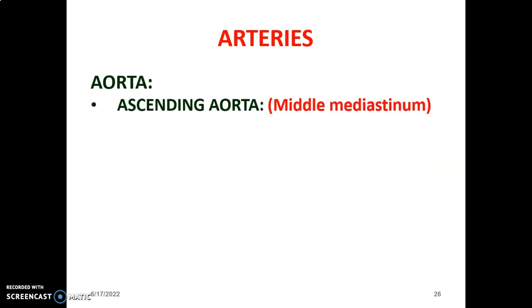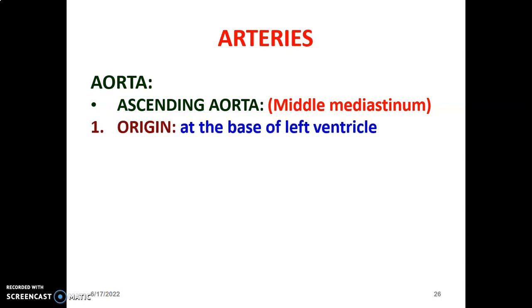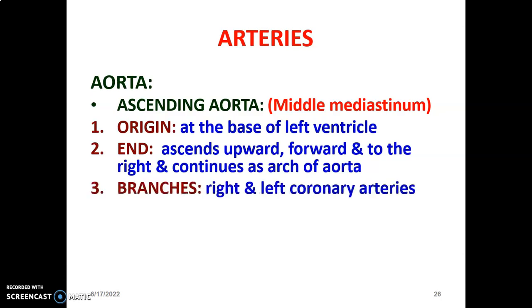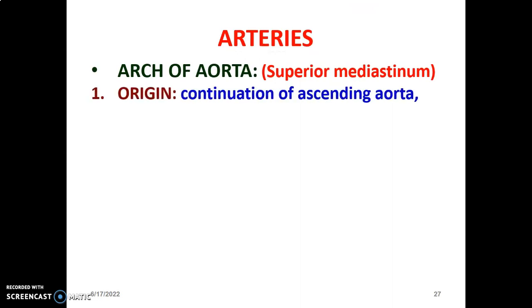The arteries found in the mediastinum include the ascending aorta, which is in the middle mediastinum. It originates at the base of the left ventricle, carrying blood from the left ventricle. The ascending aorta terminates at the plane that divides the mediastinum into superior and inferior, ascending upwards and forwards to the right, continuing as the arc of the aorta at the sternal angle of Louis at T4-T5. The branches of the ascending aorta are the right and left coronary arteries, which supply the heart.